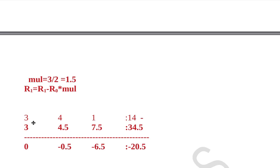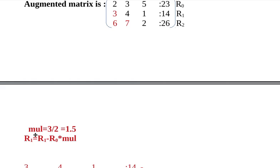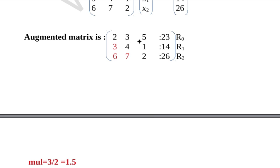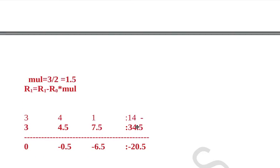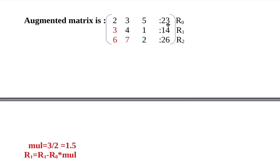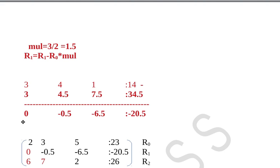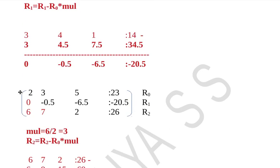R0 multiplied by 1.5 gives: 2×1.5 = 3, 3×1.5 = 4.5, 5×1.5 = 7.5, and 23×1.5 = 34.5. Subtracting from R1 [3, 4, 1, 14], we get the new R1 as: 0, −0.5, −6.5, −20.5. Our matrix now has the first element of R1 as 0.